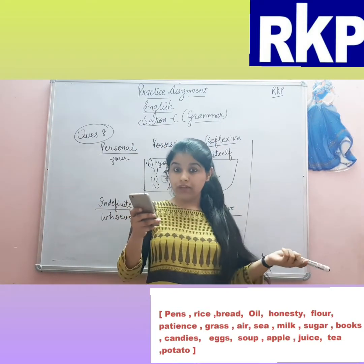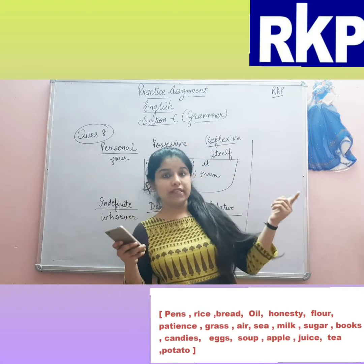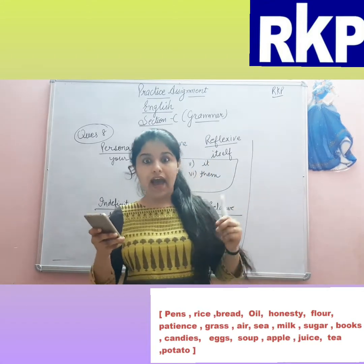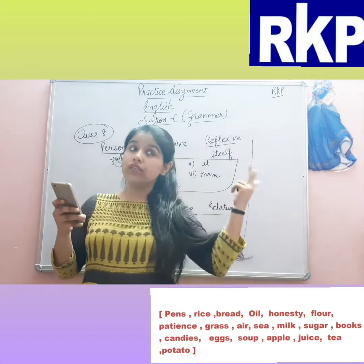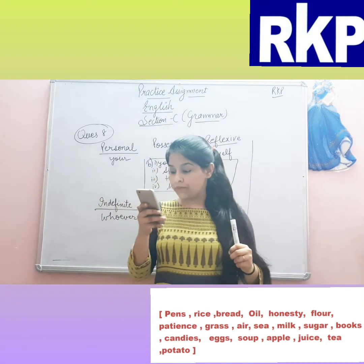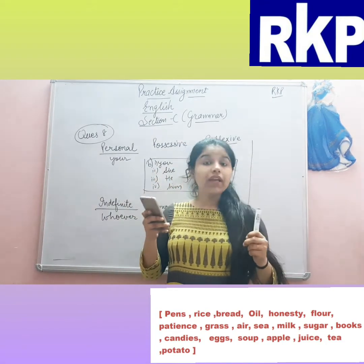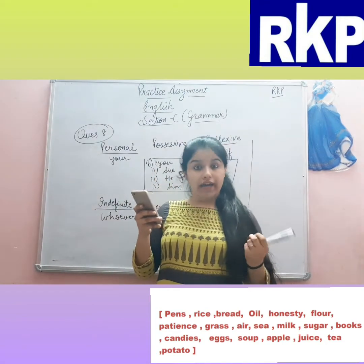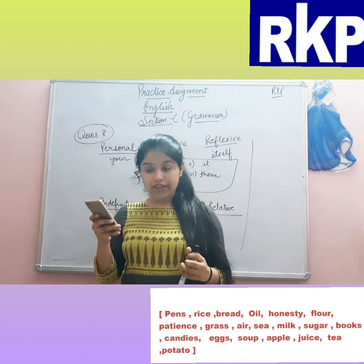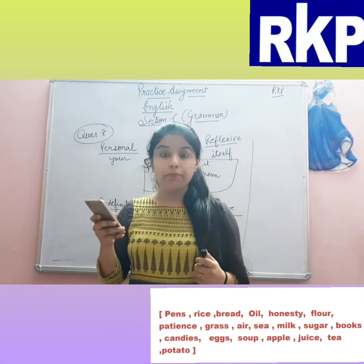Sea — countable. For example, 'I visited two seas' or 'I saw two seas in the movie.' Milk — uncountable. Sugar — uncountable.